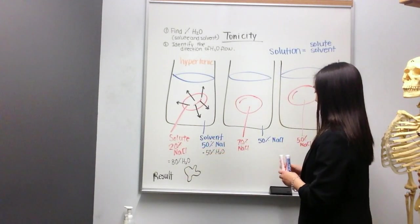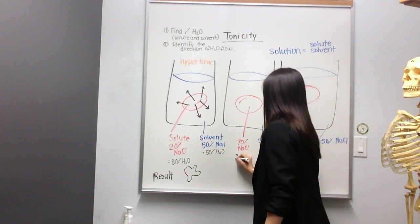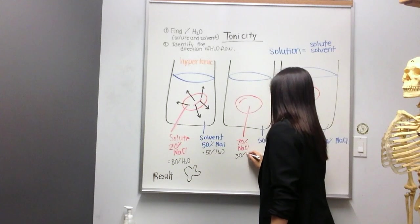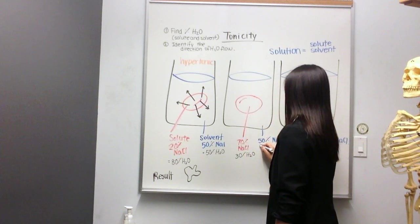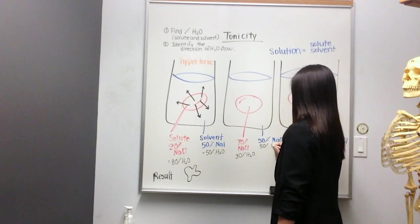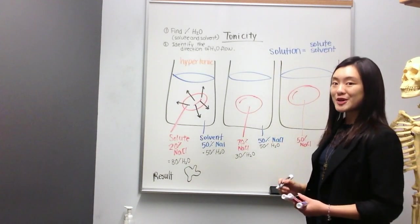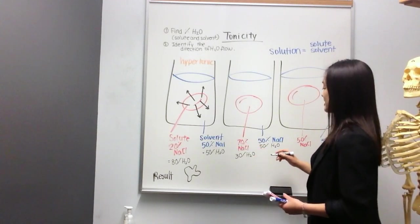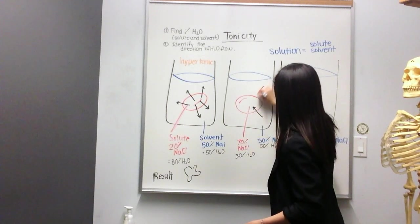Let's go to the second example here. Again, we're going to find the percentage of water. Water, in this case, the red blood cell would be 30% H2O, while the surroundings would be 50% H2O. Water, as we know, flows from high to low concentration. So in this case, water flows from the 50 into the 30. So water is flowing into the cell.